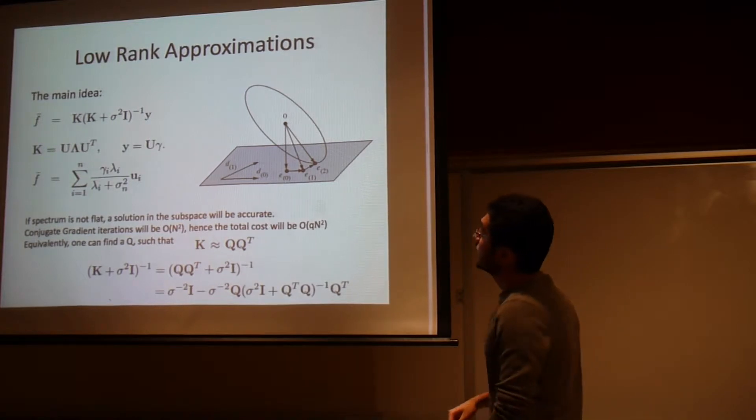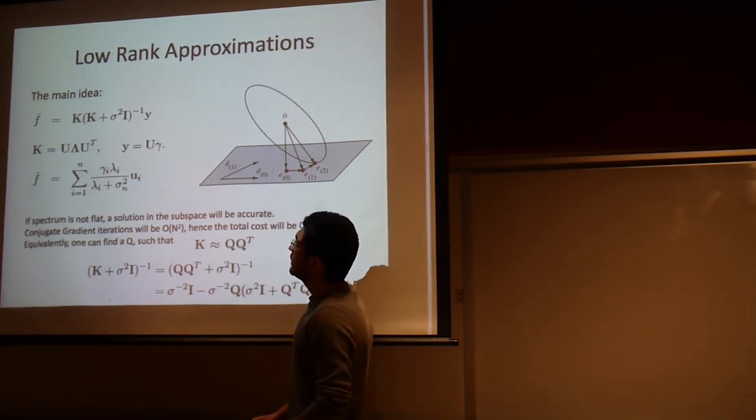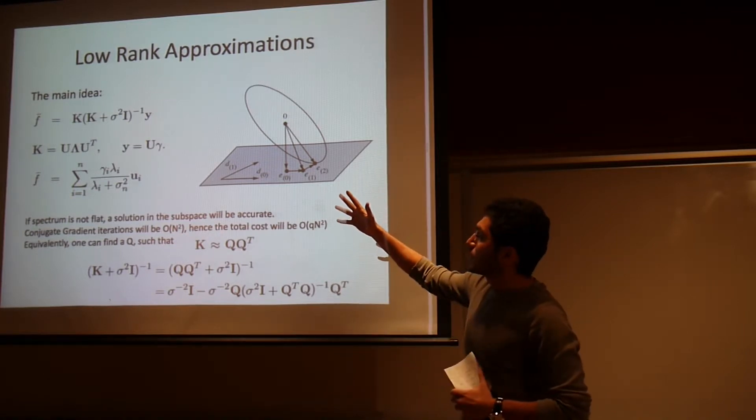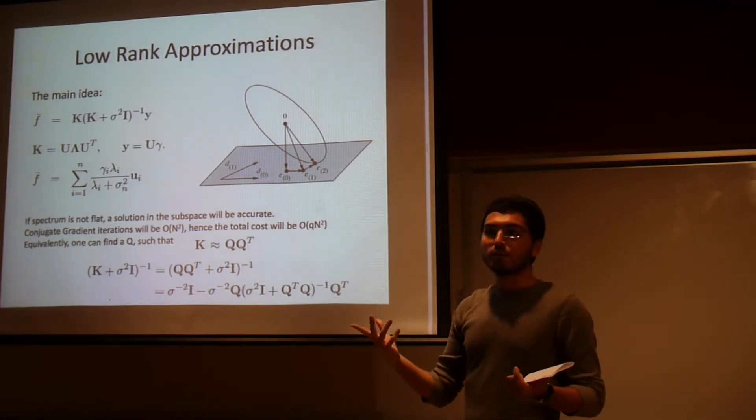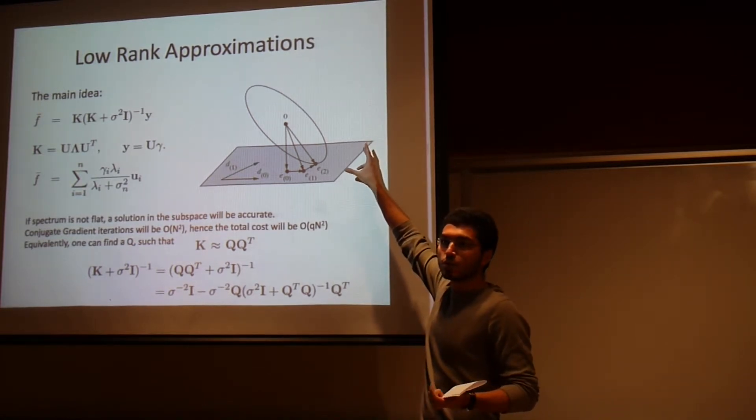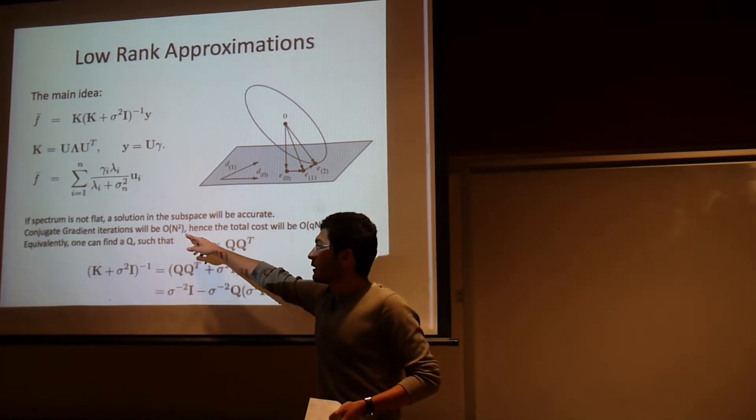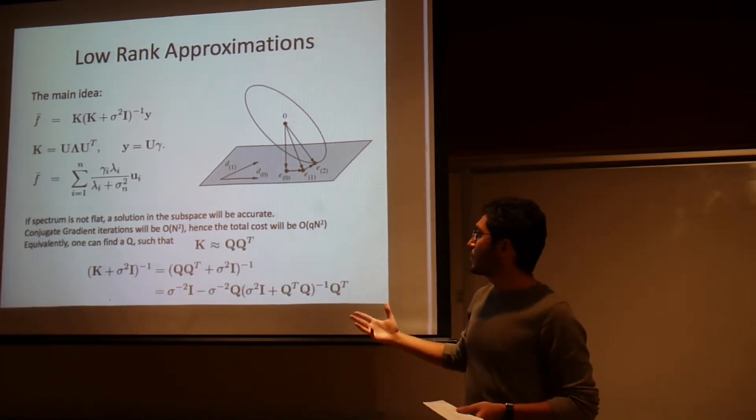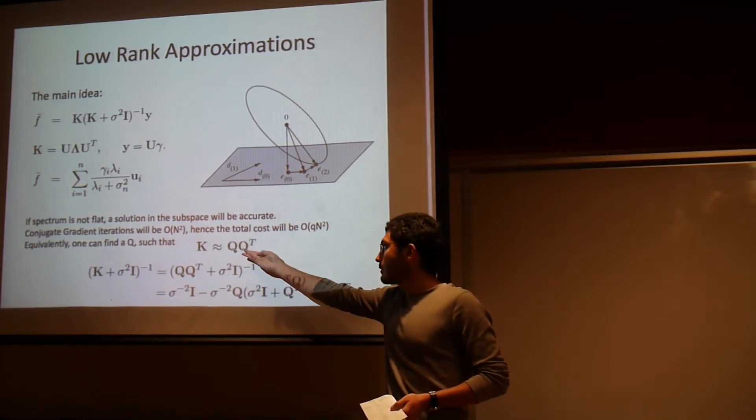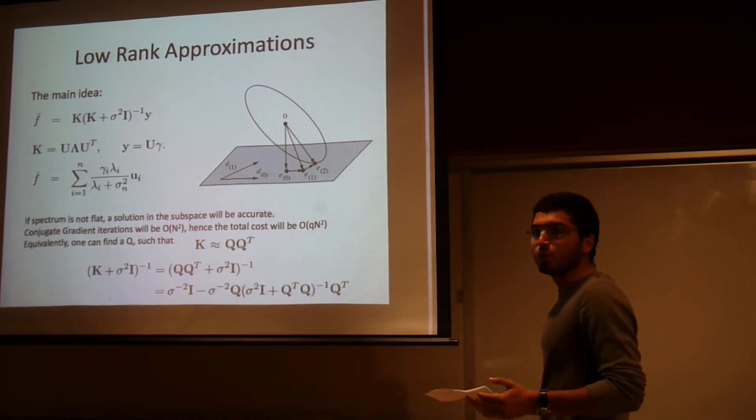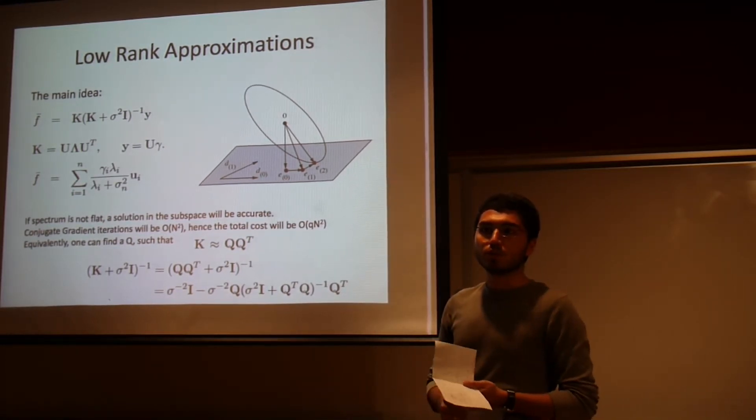So in low rank approximations what is being done is that this mean equation can be represented as a sum like this. So as you see, these lambdas over here are actually the eigenvalues of the kernel matrix. If your spectrum is not flat, the eigenvectors with the high eigenvalues are important for you. So you can just go and solve it in that subspace of interest. In general, inverting that matrix will require N cubed operations, but one single conjugate gradient step will take N squared times. So if you just do it in a subspace of size Q, then it will cost Q times N squared. It's also equivalent to representing your kernel matrix in a low rank space like this. But the issue here is that you don't know your subspace of interest. You don't know which eigenvalues are high, which eigenvalues are low. And just doing that will require an eigenvalue decomposition which is N cubed operations.